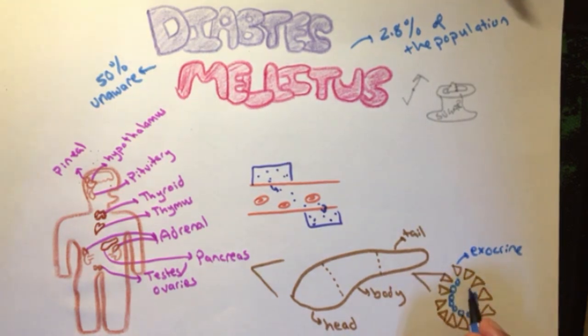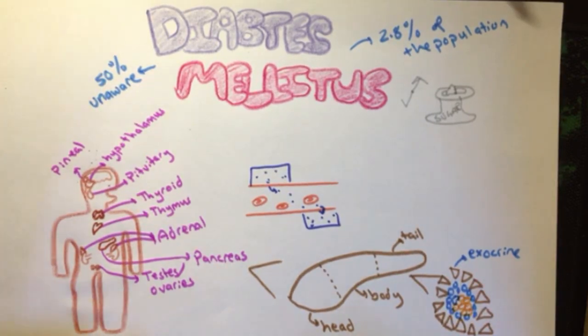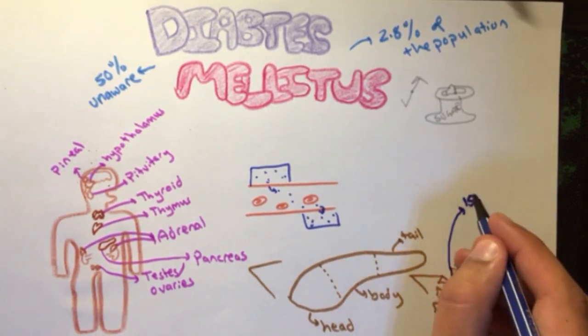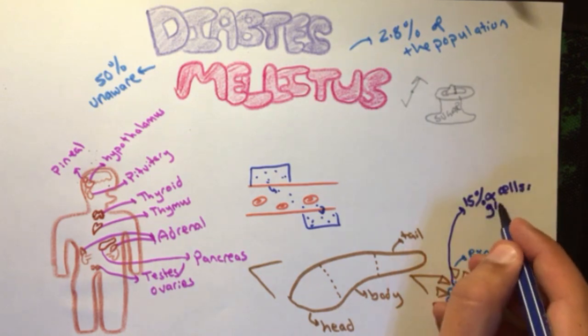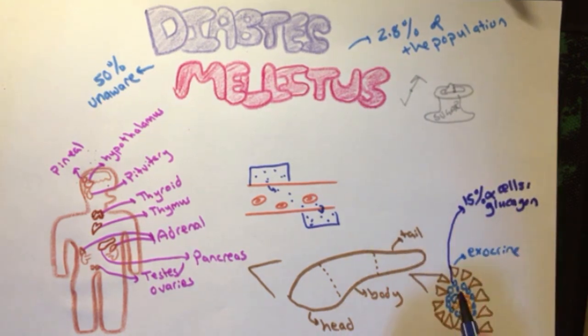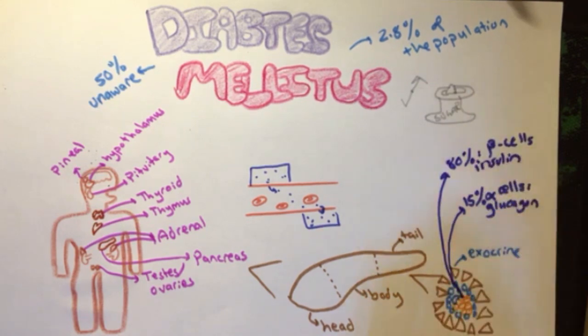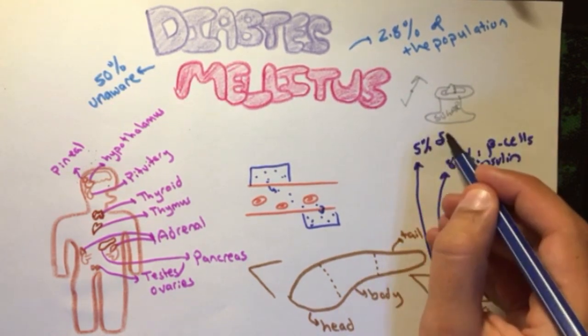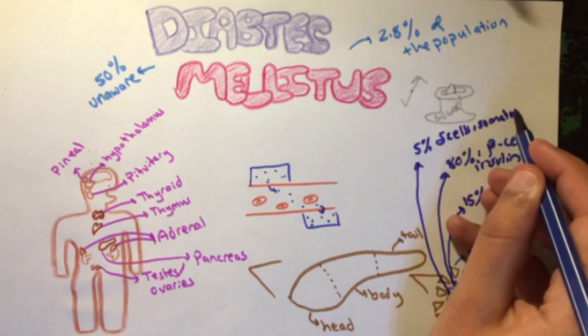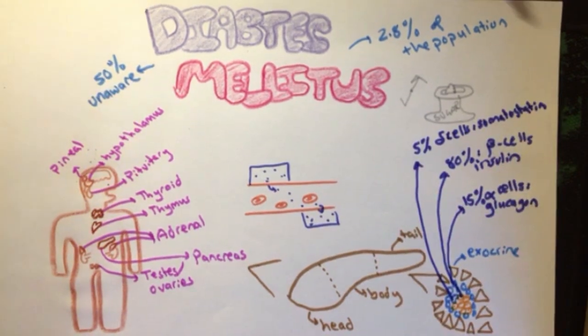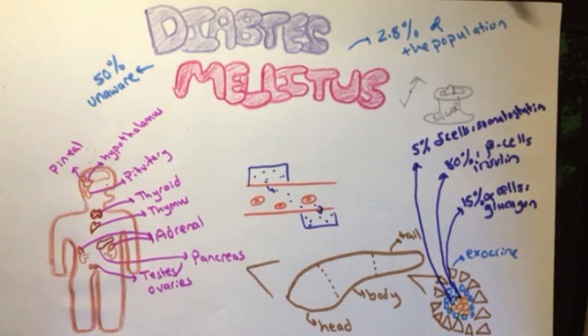These islets are of four main types: 15% made up by alpha islets, important for the secretion of the hormone glucagon; 80% made up by beta cells, important for the secretion of insulin; 5% made up by delta cells, important for the secretion of somatostatin; and the remainder F cells that release pancreatic polypeptide.